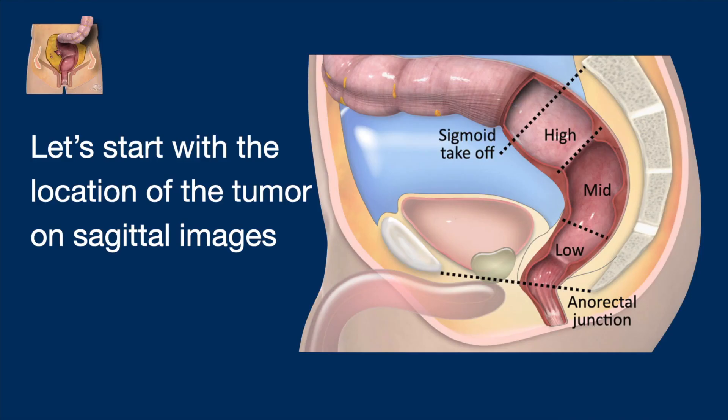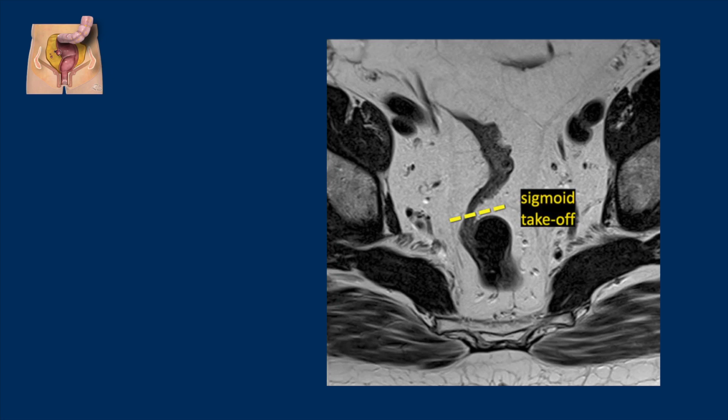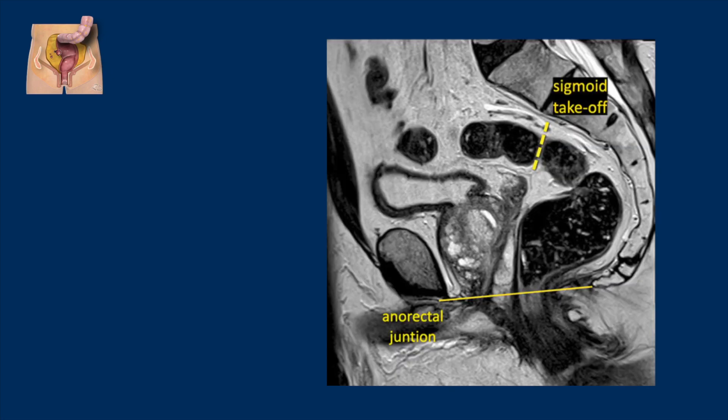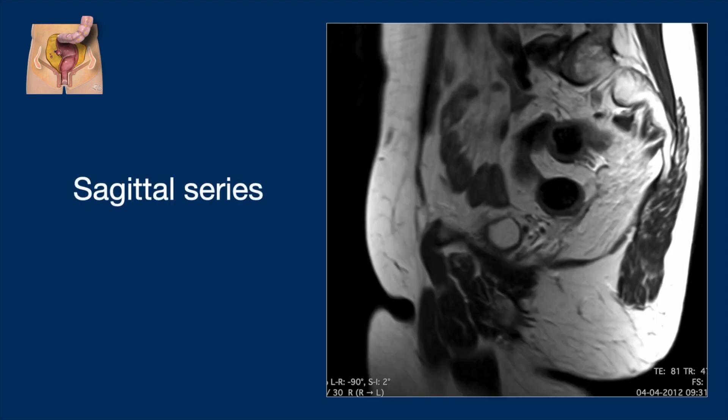Let's start with the location of the tumor on sagittal images. The rectum starts at the sigmoid takeoff and ends at the anorectal junction. On axial images the sigmoid takeoff can be seen here, and on sagittal images it's where the sigmoid takes its horizontal course away from the sacrum. Now let's start with the sagittal series.